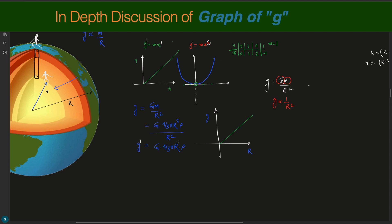If we draw a graph of g versus r, with g on the y-axis and r on the x-axis, this graph is not y = x²; it is definitely y proportional to 1/x². We need to first understand how the graph for y proportional to 1/x² looks, and then draw our gravitational acceleration graph accordingly.